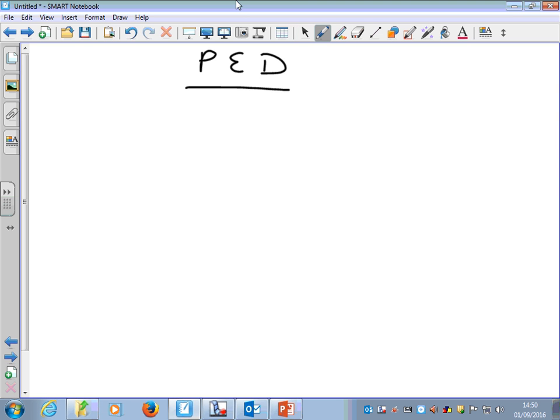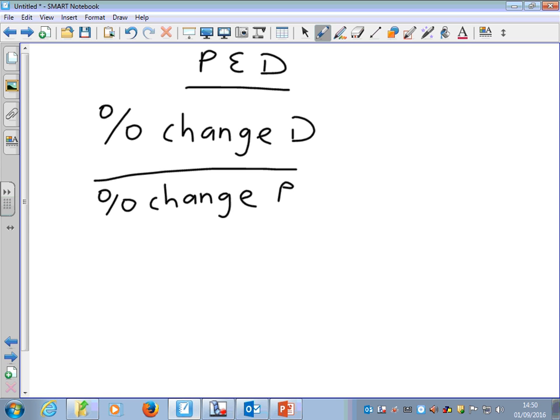And what we're looking at here is the responsiveness of demand to a change in price. So there is a formula for this, and it's the percentage change in demand divided by the percentage change in price. In other words, the responsiveness of demand to a change in price levels. So what we're looking at is how much will demand change as price changes.